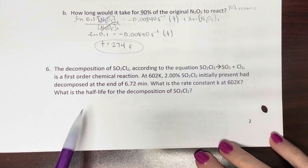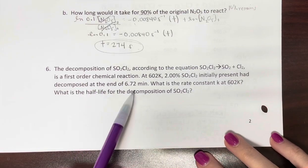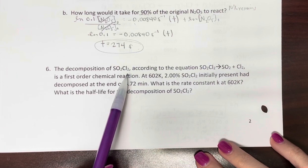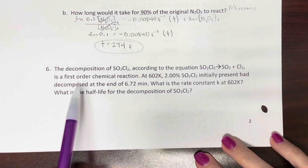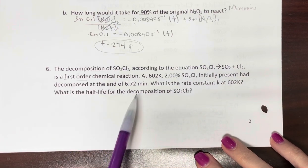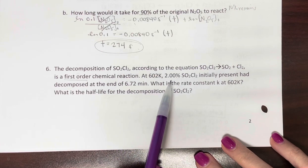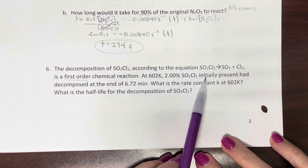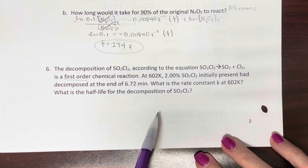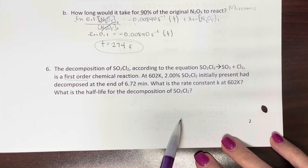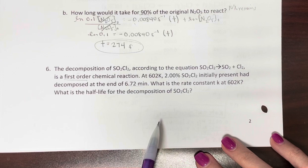This last one on page 2, same decomposition reaction as we used in number 4. Still first order. We're given a temperature, and it says 2% of what was initially present had decomposed at the end of a period of time. What is the rate constant, and what is the half-life?